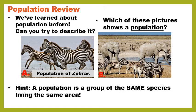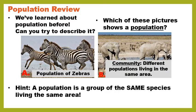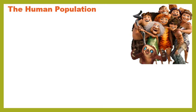A population is a group of the same species hanging out in the same area at the same time. Why isn't picture B a population? Because it actually shows a community, which is different populations living in the same area. In that picture there are two populations — a population of elephants and a population of zebras — and since they're both in the same space at the same time, that is described as a community.